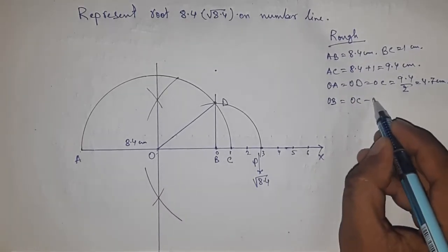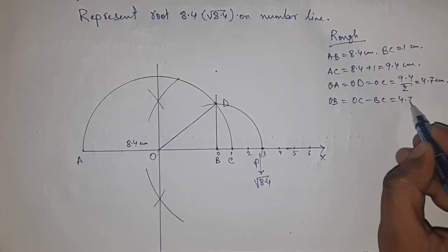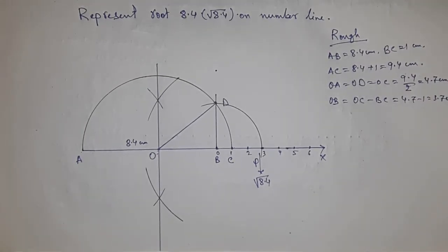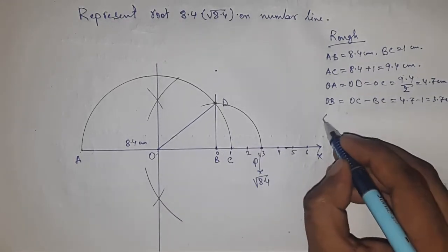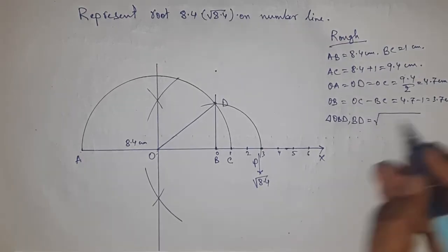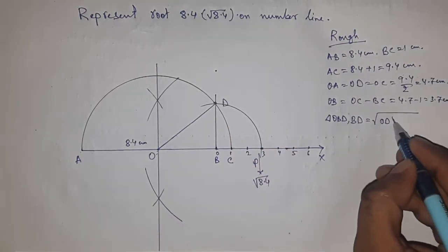Distance OB equals OC minus BC, so putting the values of OC and BC, this is 3.7 centimeters. Now from right angle triangle OBD, we can write BD equals root of OD squared minus OB squared, so putting the values of OD and OB.